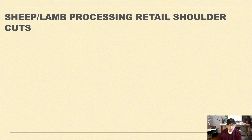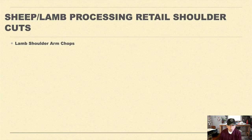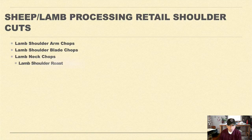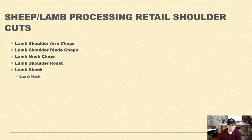Sheep and lamb processing retail shoulder cuts are: lamb shoulder arm cuts, arm lamb shoulder arm chops, arm shoulder blade chops, lamb neck chops, lamb shoulder roast, lamb shank, and lamb neck.